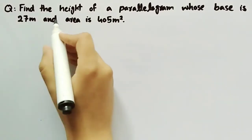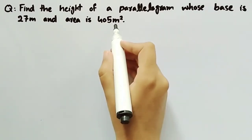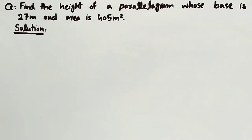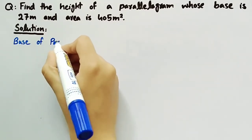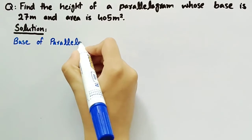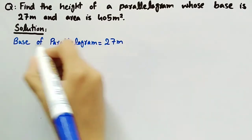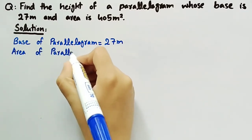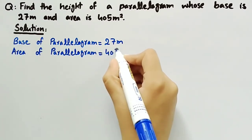In this video, we will find the height of a parallelogram whose base is 27 meters and area is 405 meter square. Coming towards its solution, firstly write the given data. It is given that base of parallelogram is equal to 27 meters, and area of parallelogram is equal to 405 meter square.